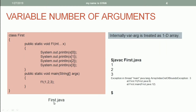We have the java file first.java. In first.java, we have the class first, which has the method main and the method f1. In f1, we are using a variable number of arguments. One important point to notice is that internally, a variable number of arguments is treated as a one-dimensional array. So when you call f1 using three integers, the variable x will be treated as an integer array of three elements — internally, x is an integer array of three elements.